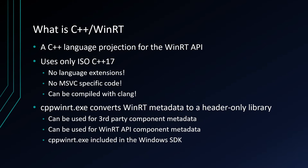So what is C++/WinRT? It's the C++ language projection for the WinRT API. It uses only ISO C++17 — no language extensions, no MSVC-specific code. You can even compile it with Clang if you want better error diagnostics. They ship a tool called cppwinrt that reads the WinRT metadata and generates a header-only library that allows you to call the methods and interfaces described by the metadata.